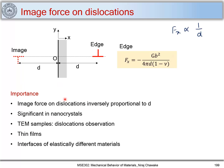That is why image force becomes significant when we have nanocrystals. The dimensions of nanocrystals are in nanometers, so dislocations will experience a force from these surfaces. A dislocation inside a nanomaterial will feel a force from the surface, and it can move onto the surface and get removed from the material. Thus nanocrystals and nanomaterials will not have too many dislocations inside them, and thus they possess high strength.